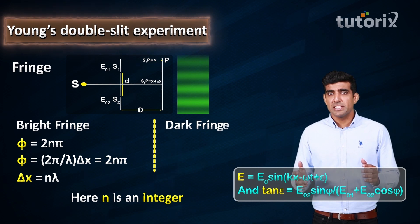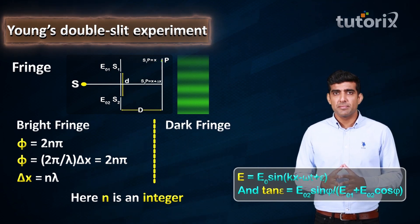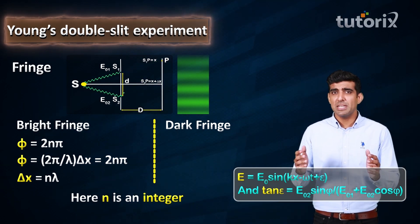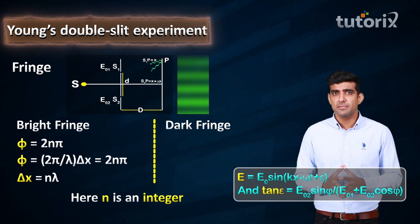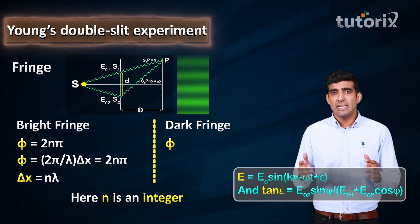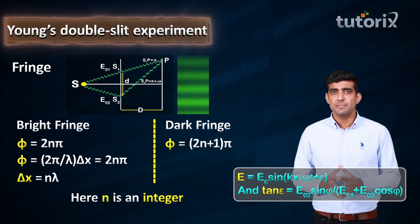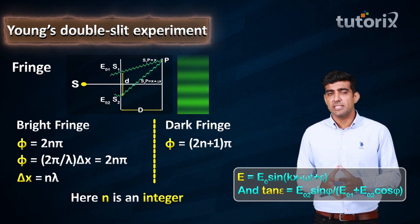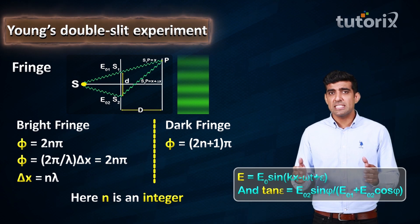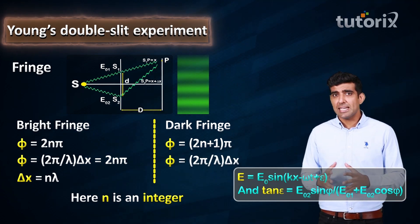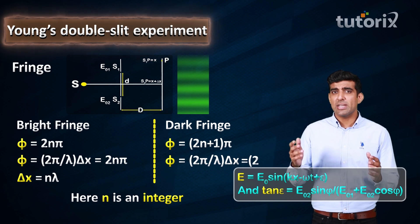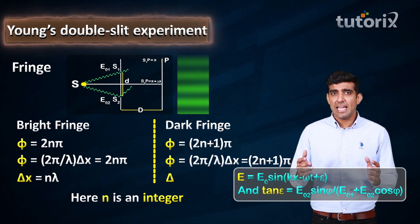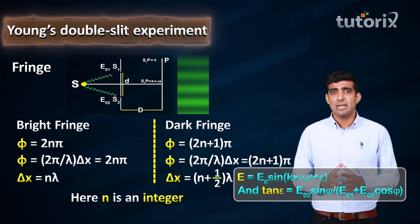For a dark fringe, the value of E0 should be minimum. Therefore, cos φ should be minimum, which has a minimum value of −1. So the value of φ is (2N + 1)π. This can also be expressed in terms of path length difference: since phase difference equals (2π/λ)·delta X = (2N + 1)π, the path length difference delta X can be written as (N + ½)·lambda.